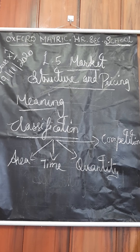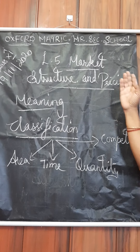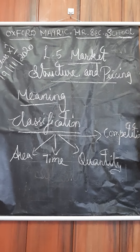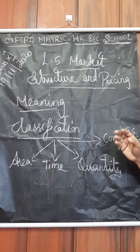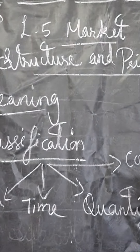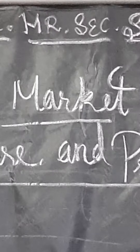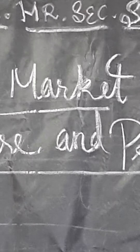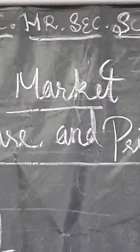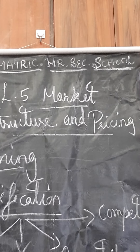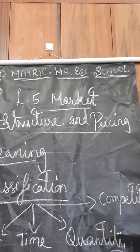Hi kids, today we are going to enter into the new chapter: market structure and pricing. First, you should know the meaning of the market. Market is the place where products or commodities are sold as well as bought. In economic terms, it is the place where goods are exchanged — exchanging the goods means buying and selling.